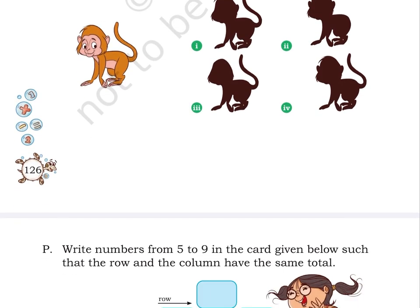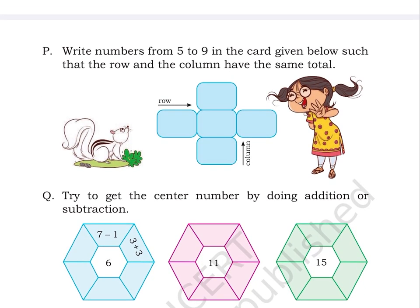Page number 127. Puzzle P: Write numbers from 5 to 9 in the card given below such that their row and the column have the same total. Here, we have 3 blank boxes in a row. Including the middle blank box of the row, there is a column of 3 blank boxes. You have to fill in these boxes with the right numbers. There is also a picture of a squirrel given here. A girl is also standing next to the boxes and is showing the number 3 with the help of her fingers.